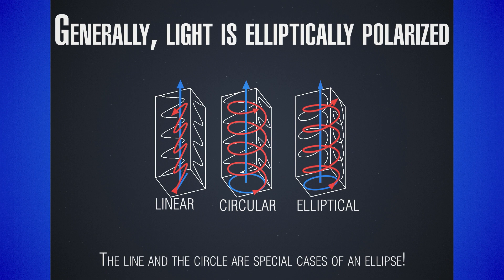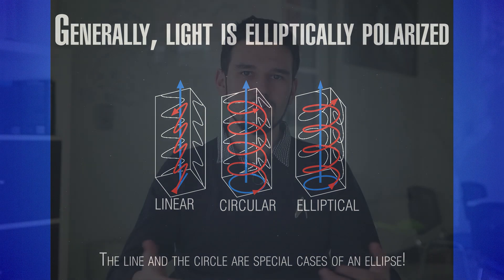You can see in the animation the difference between the three kinds of polarization. We usually only refer to linear and circularly polarized light as special cases, since generally light is always elliptically polarized. Linear and circular polarizations are just special cases of elliptical: if you take an ellipse and make its two semi-major axes the same length, you get a circle. And if you completely eliminate one semi-major axis, you get a line — which is exactly the linear polarization case.